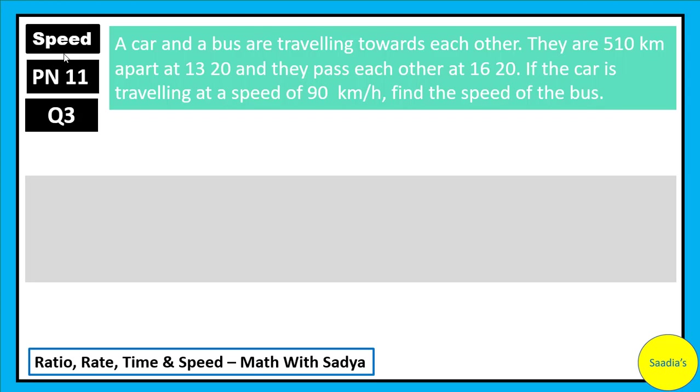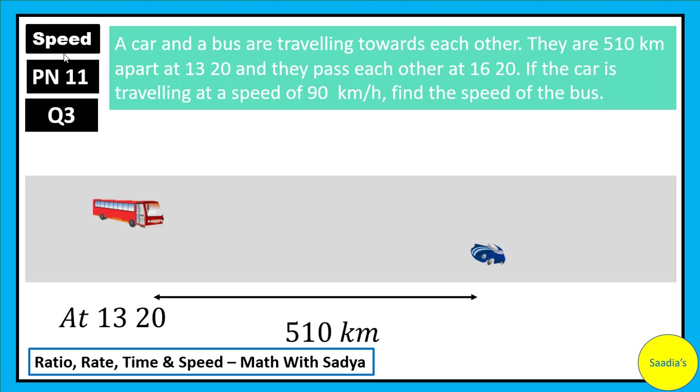Let's look at the scenario of this question using an animation. A bus and a car are travelling towards each other. At 1320, that is 13 hours and 20 minutes, the distance between the bus and the car is 510 km. They continue their journey and at 1620, 16 hours and 20 minutes, both the bus and the car cross each other. It means that both have travelled some distance from the initial point. We need to find the speed of the bus when speed of the car is given to us.